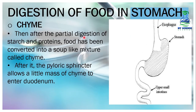After the partial digestion of starch and proteins, the food is converted into a soup-like mixture called chyme. When starch and proteins are partially digested, they are transformed into this soup-like mixture called chyme.